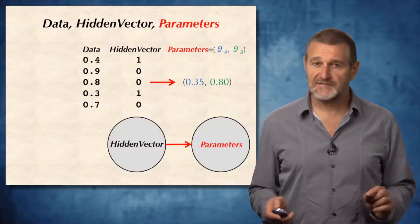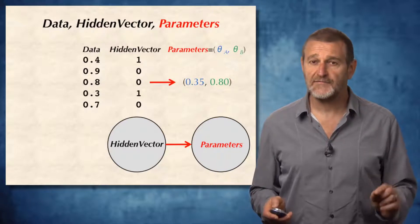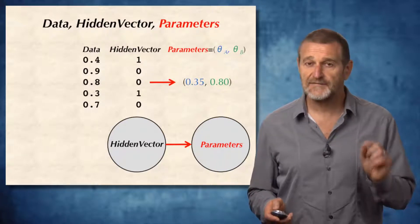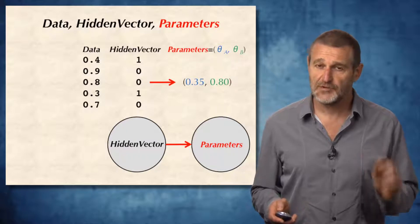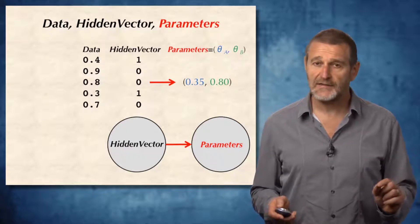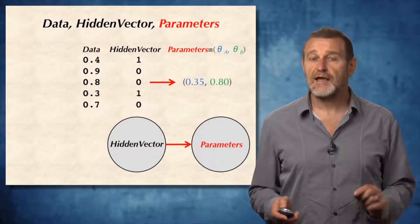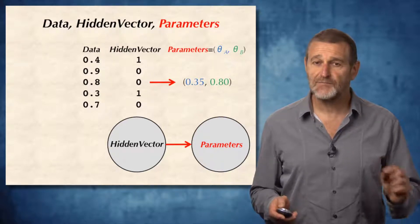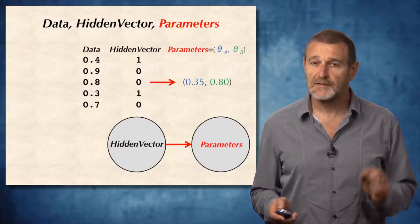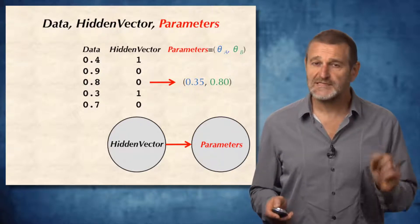In the previous section, we learned that if hidden vector is known, we can derive parameters through dot product. But in reality, neither hidden vector nor parameters are known. Therefore, it is unclear how to derive the biases of the coin. Let's start from a simpler problem.